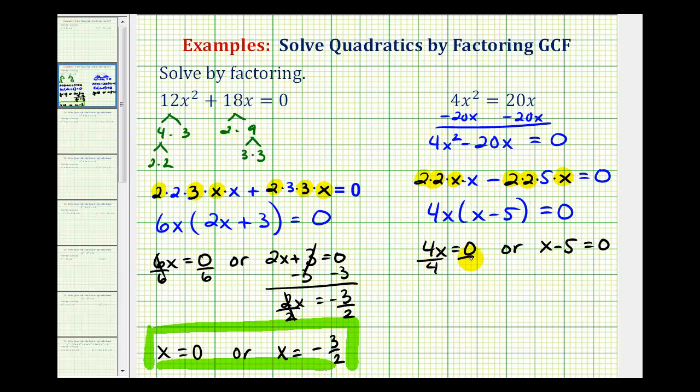So here we divide both sides by 4. This would give us x equals zero. And for the second equation, we would add 5 to both sides. This would give us x equals positive 5. So our two solutions are x equals zero, or x equals 5.